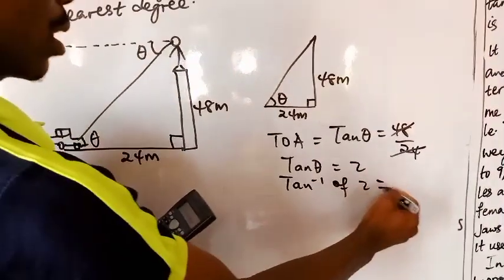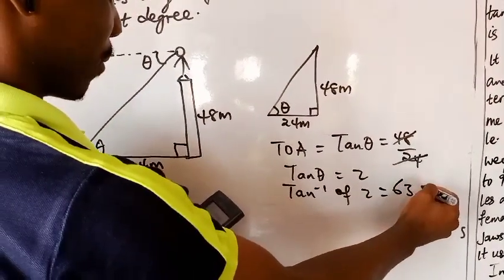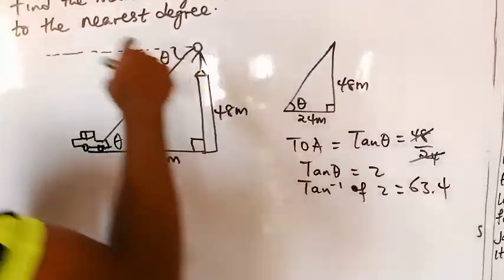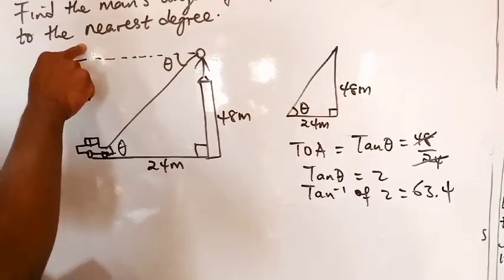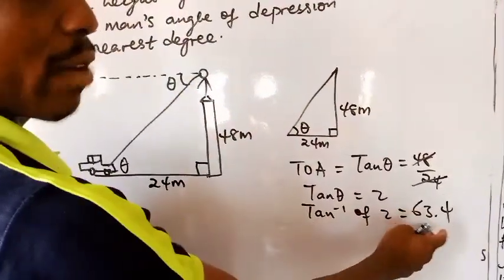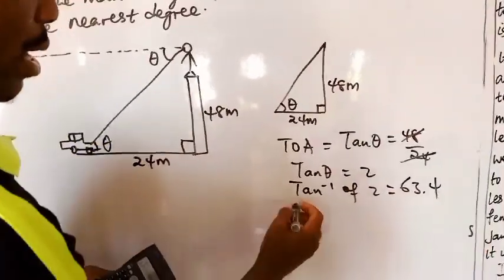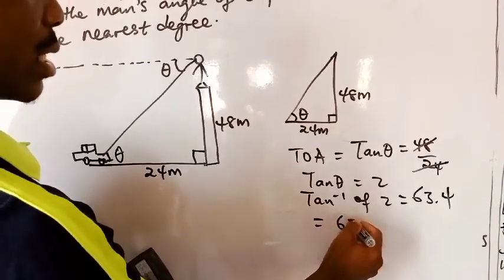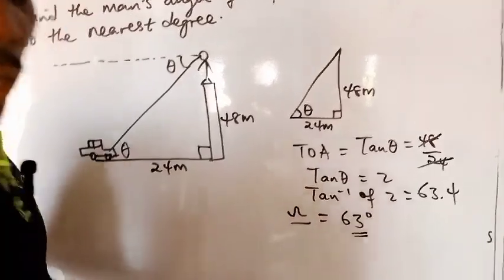So this gives us 63.4 degrees. To one decimal place it's 63.4, but the question says we should express this to the nearest degree. So the decimal 0.4 rounds down. The angle of depression would be 63 degrees approximately.